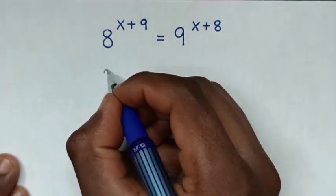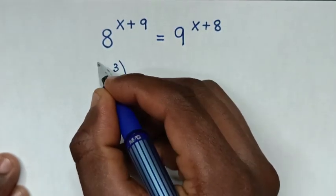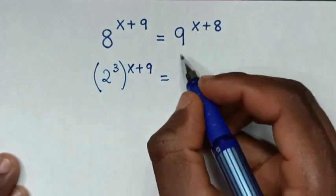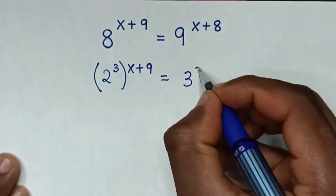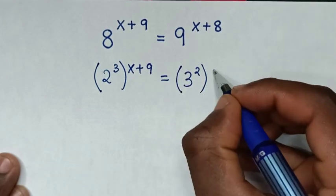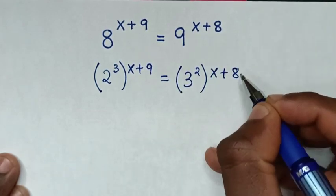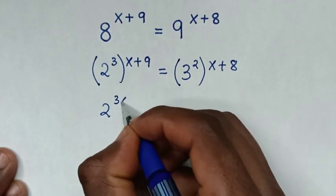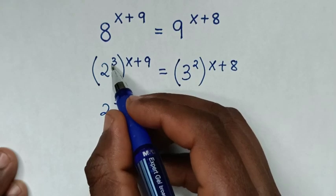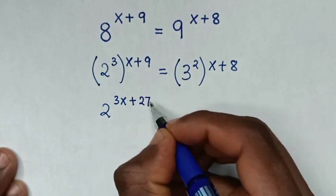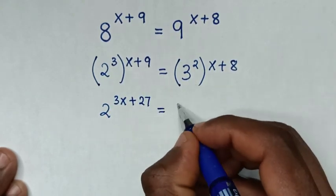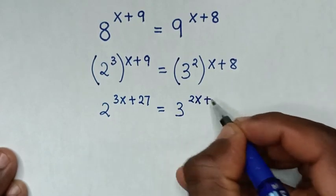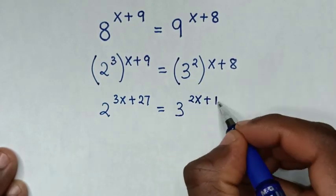So from 8: 8 is the same as 2 power of 3, then bracket power of x plus 9 is equal to 9, which is the same as 3 squared, then bracket power of x plus 8. Then it will be 2 power of 3x plus 27 is equal to 3 power of 2x plus 16.